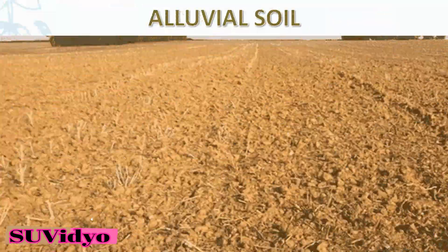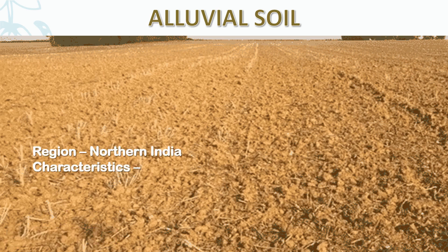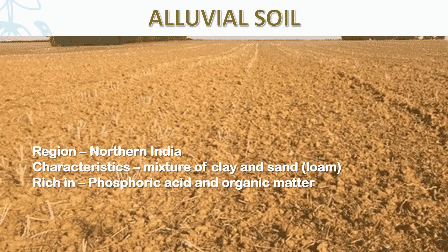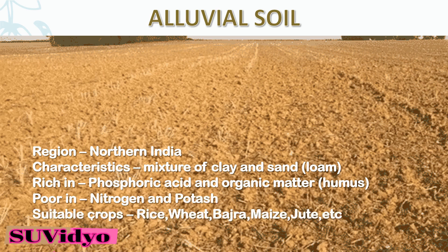Various types of soil found in India. First is alluvial soil, found in northern India. It is a mixture of clay and sand, that is loam. It is rich in phosphoric acid and organic matter but poor in nitrogen and potassium. Suitable crops that grow in alluvial soil are rice, wheat, bajra, maize, jute, etc.